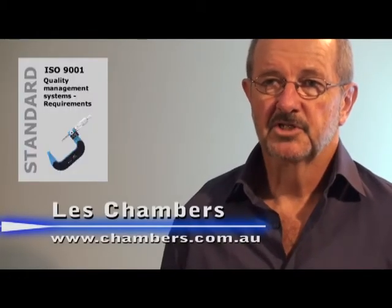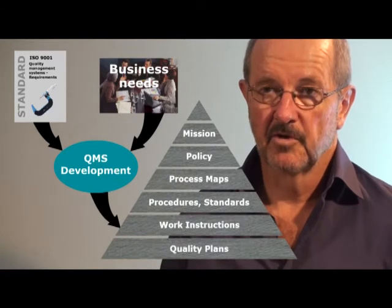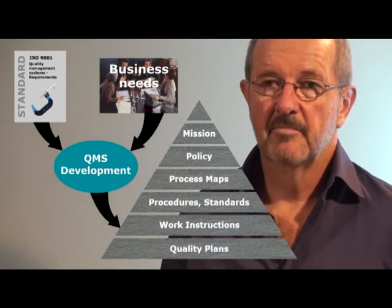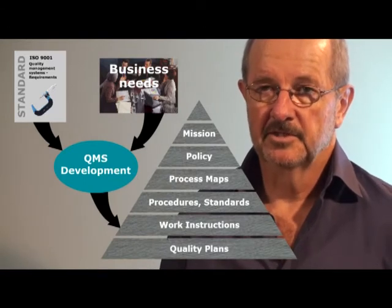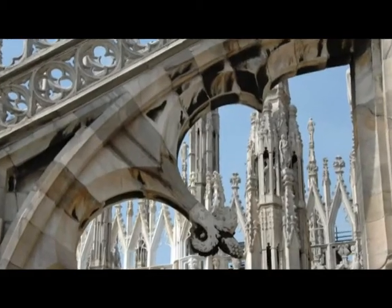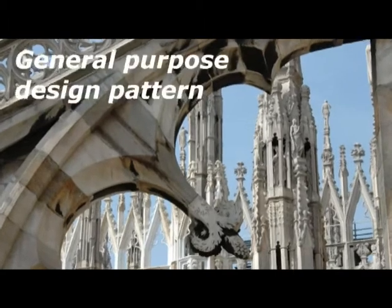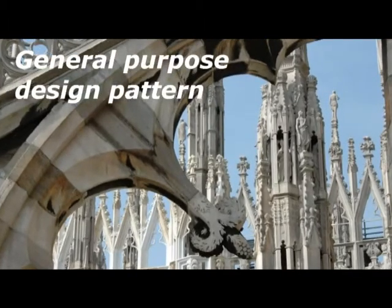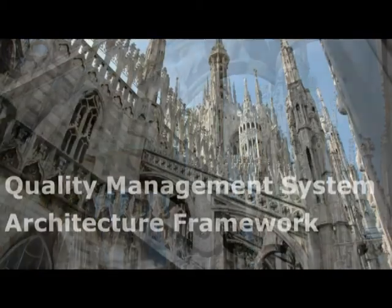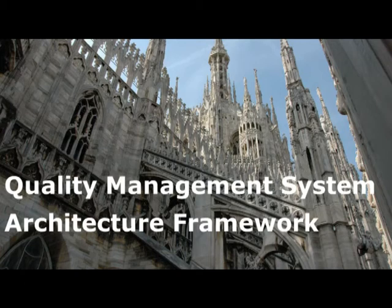The ISO 9001 Quality Management Framework presents a set of requirements. The job of the quality manager is to develop a quality management system that complies with those requirements while meeting the unique needs of the business. I have a way of approaching this design — it's really a general purpose design pattern. I call it the Quality Management System Architecture Framework.